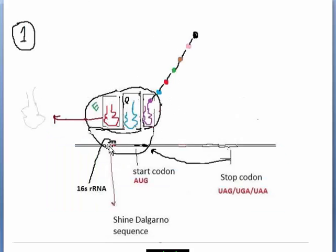That was the final step of elongation, the ending state of elongation. Now the termination will start. That means the ending state of elongation is the starting point of termination.